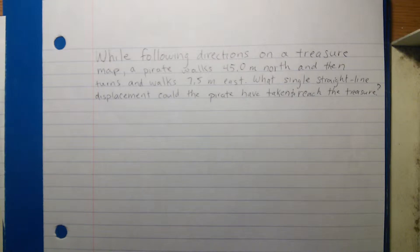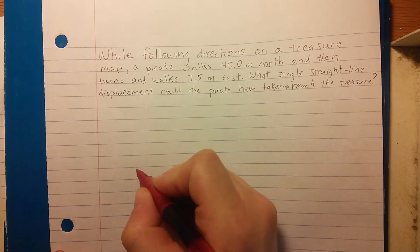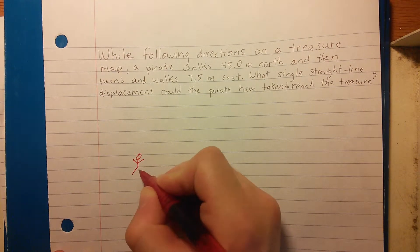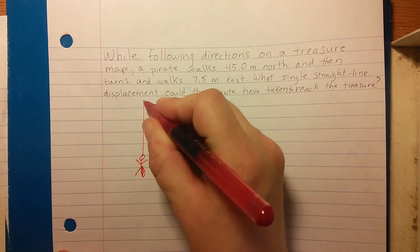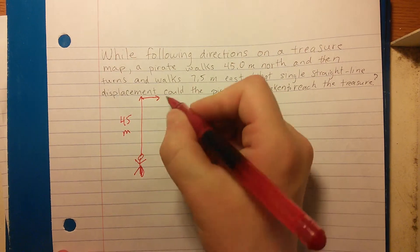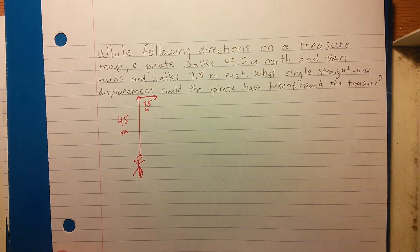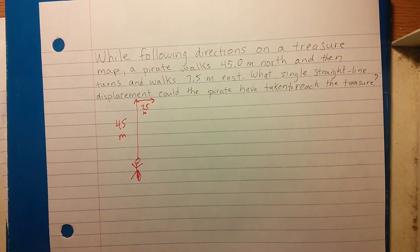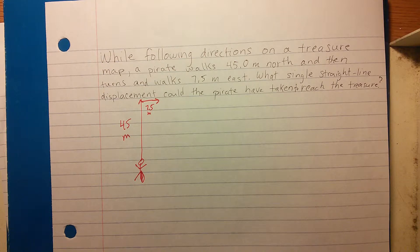All right, I'm going to assume that you've paused it and tried it. Let's do this together. Let's say our pirate starts here. He goes 45 meters north and then 7.5 meters east. Notice how I'm not exactly drawing these to scale, but I am drawing the 7.5 meters a lot less than 45, so that should help you when you're doing these problems because you can almost guess what the resultant displacement should be in terms of both magnitude and its angle.